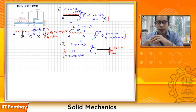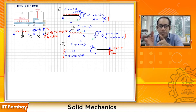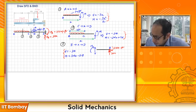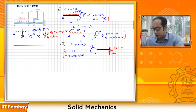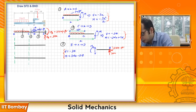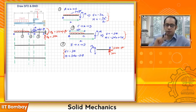Now that we have expressions for all three sections, we can draw the shear force diagram and the bending moment diagram. Let us mark the beam from A to B and draw vertical guide lines at points C, D, and B to keep track of the different coordinates.